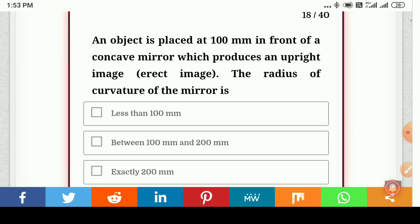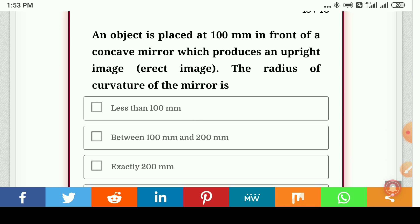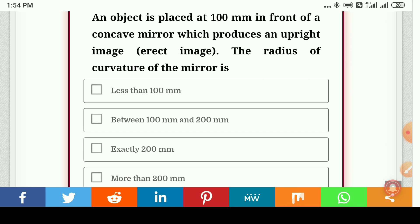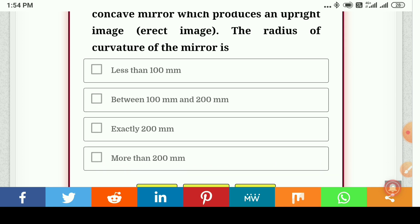An object is placed at 100 millimeters in front of a concave mirror which produces an upright image. The radius of curvature of the mirror is... so here answer is more than 200 millimeters, the correct answer.